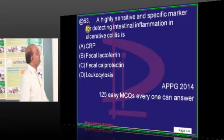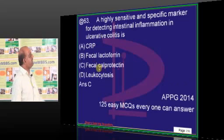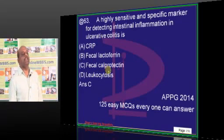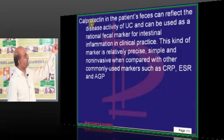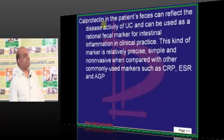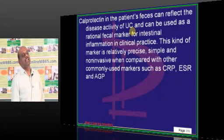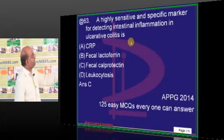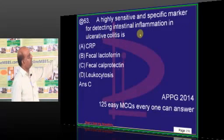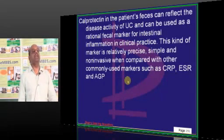To detect intestinal inflammation, the answer is fecal calprotectin — not lactoferrin. Calprotectin in the patient's feces can reflect the disease activity of ulcerative colitis and can be used as a rational fecal marker. It has very good sensitivity compared to earlier precursors.